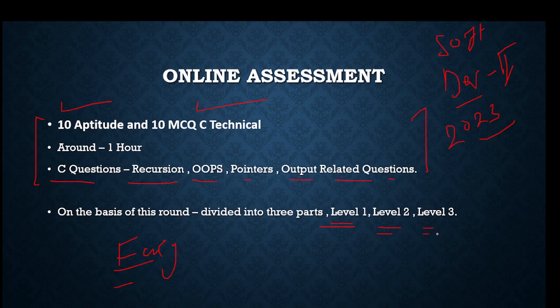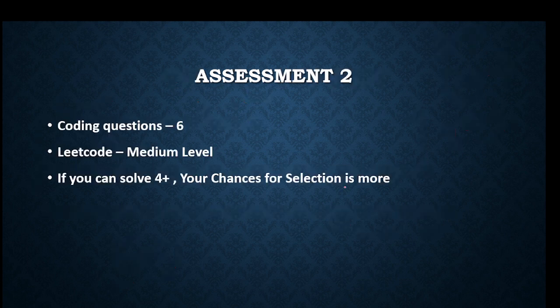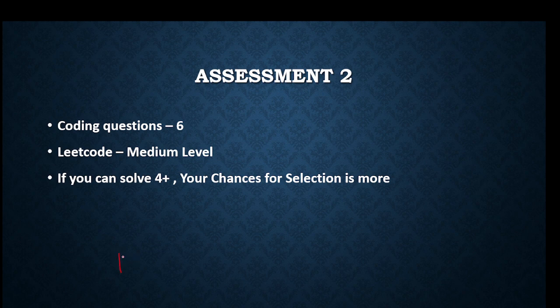If you get shortlisted with the highest marks, then you will be going for level 1, then level 2, then level 3. This assessment basically decides your level in Zoho. I am discussing this for software developer level 2.